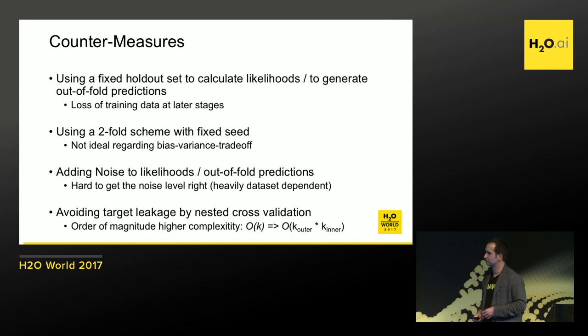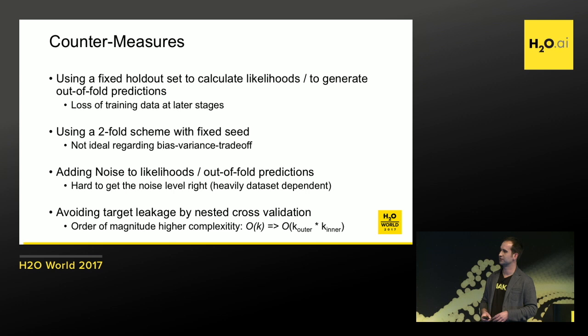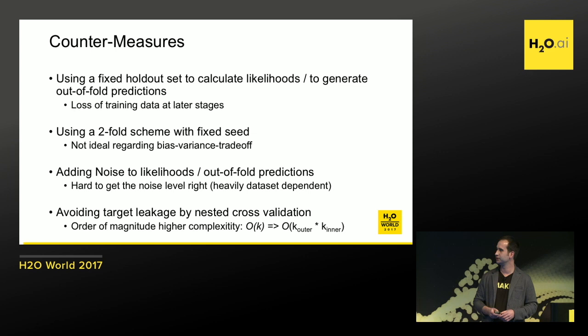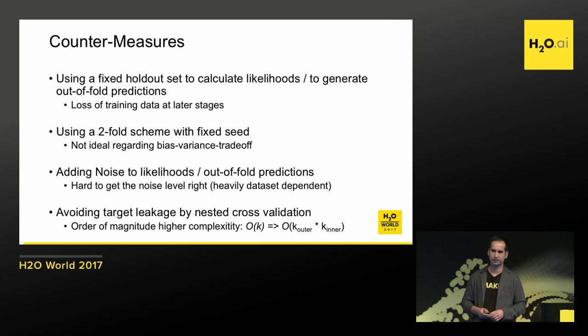The best method is actually nested cross-validation. The drawback is that it increases complexity from linear to quadratic, but it works best in practice — it gets rid of the leakage and is really powerful. We use it quite often in Kaggle competitions to gain an edge over other teams.